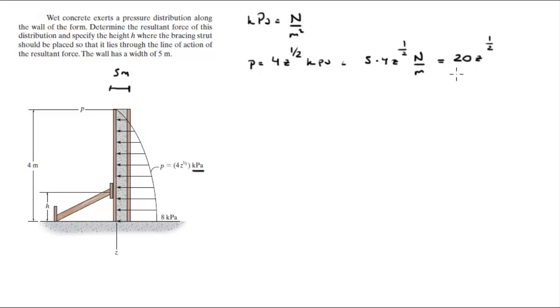Now you know that the area under the curve from 0 to 4 is 20z to the 1/2 dz, which is equal to 20z to the 3/2 over 3/2 from 0 to 4.